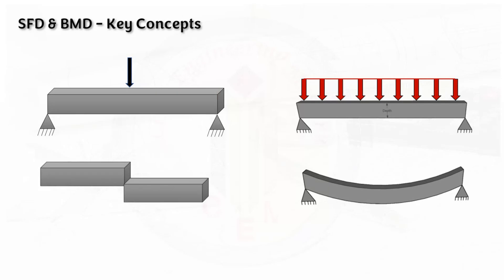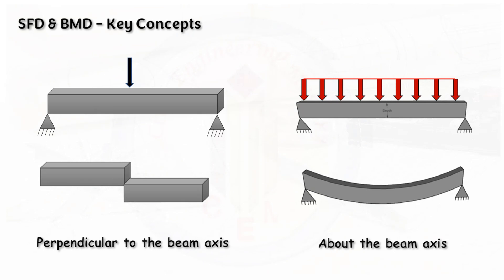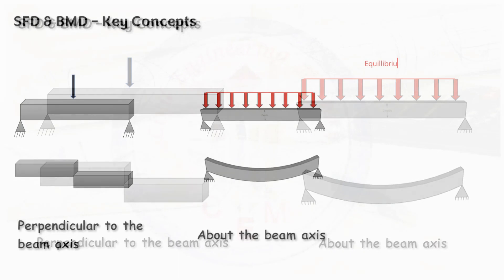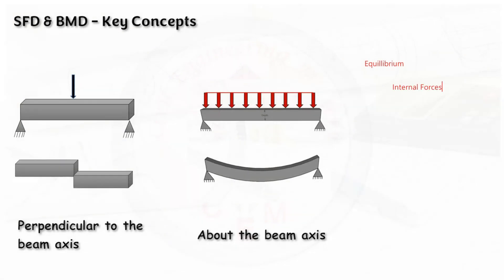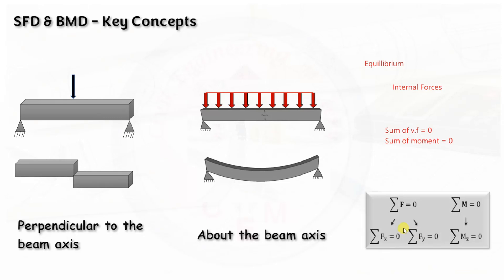Let us understand the key concept. When a load is applied on the beam, internal forces develop due to the externally applied load — these are shear force and bending moment. Shear force acts perpendicular to the beam axis, whereas bending moment acts about the beam axis. The beam must be in equilibrium to resist these internal forces. If you cut any section, the sum of vertical forces equals zero (shear force condition) and the sum of moments equals zero (bending moment condition).